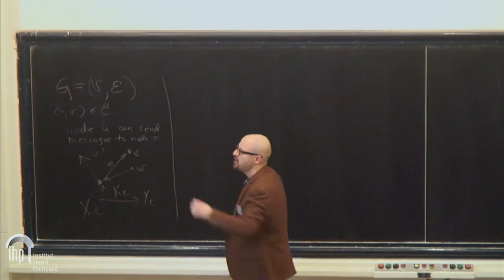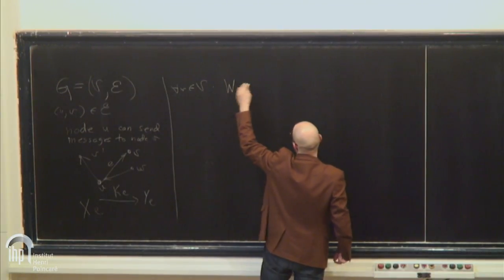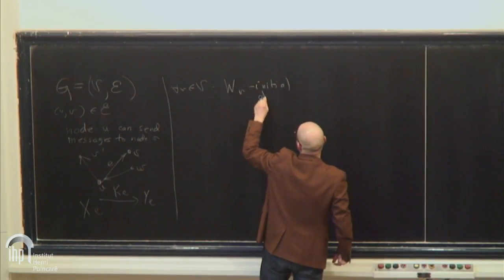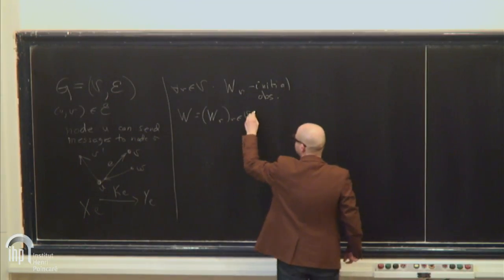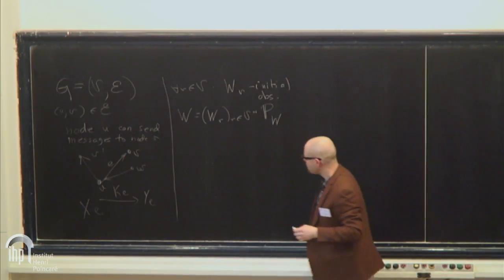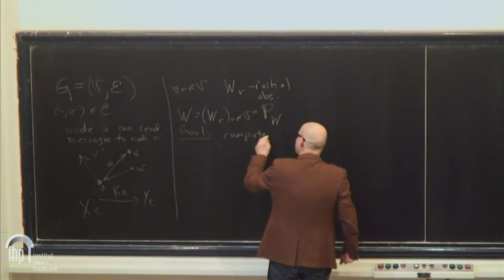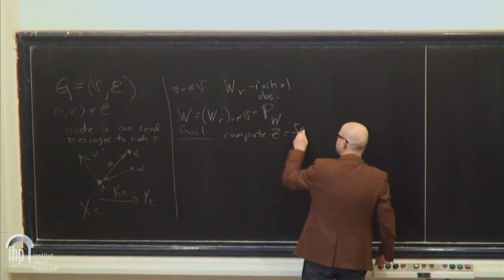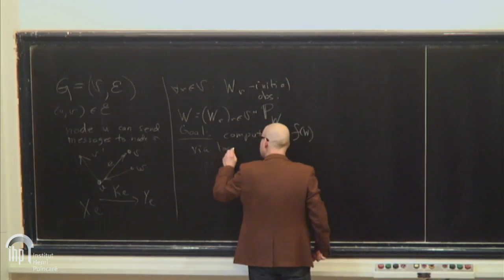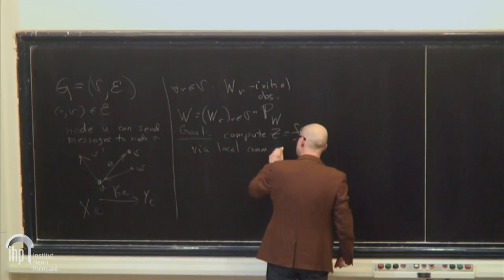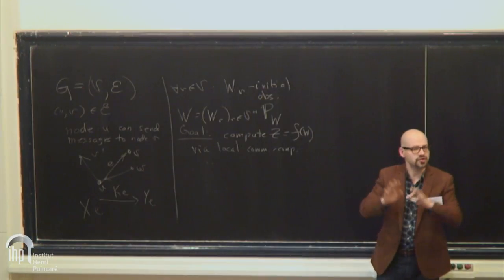Here's the computation model. Each node holds a random observation: W_V is the initial observation. The vector of all observations, call it W, has some joint distribution assumed known, and all nodes know it. The goal is to compute a random variable Z, which is some fixed function of all the nodes' observations. This is done through local communication and computation: nodes initially start knowing only their input to the function, and then everybody wants to compute this function by talking to each other.